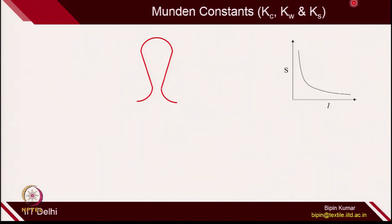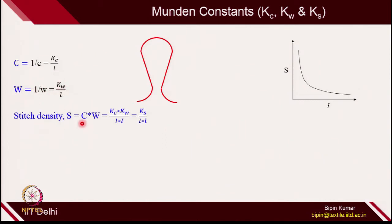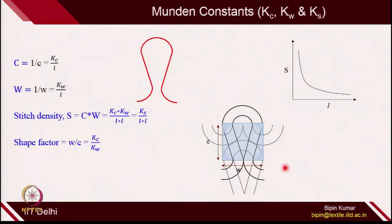Munden proposed 3 constants relating fabric structural parameters with loop length. The first constant is Kc, which relates courses per inch with loop length. The second constant is Kw, which relates wales per inch with loop length. The third constant, Ks, relates stitch density with loop length squared. If you know Kc and Kw, Ks can be found. These three Munden constants became very useful in the knitting industry, because you simply measure the loop length and, if you know the constants, you can find out many structural parameters.